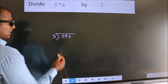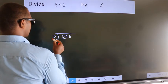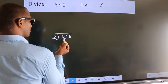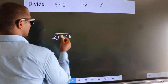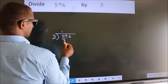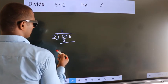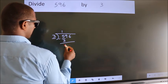Next. Here we have 5, here 3. A number close to 5 in 3 table is 3 1s 3. Now, we should subtract. We get 2.